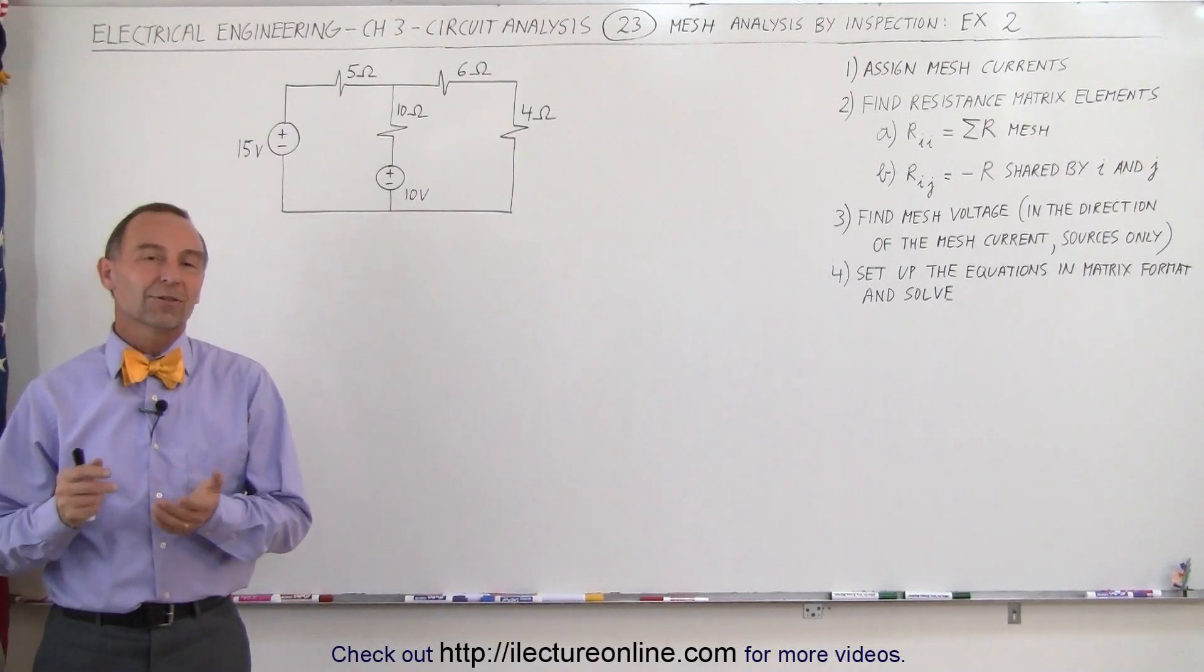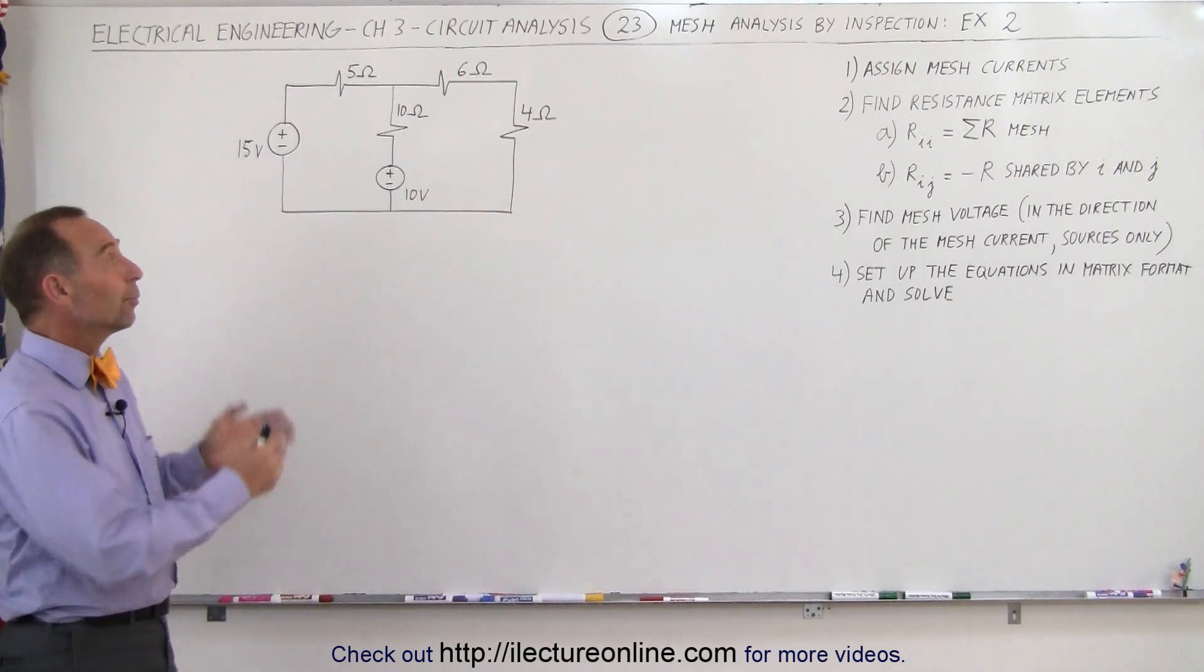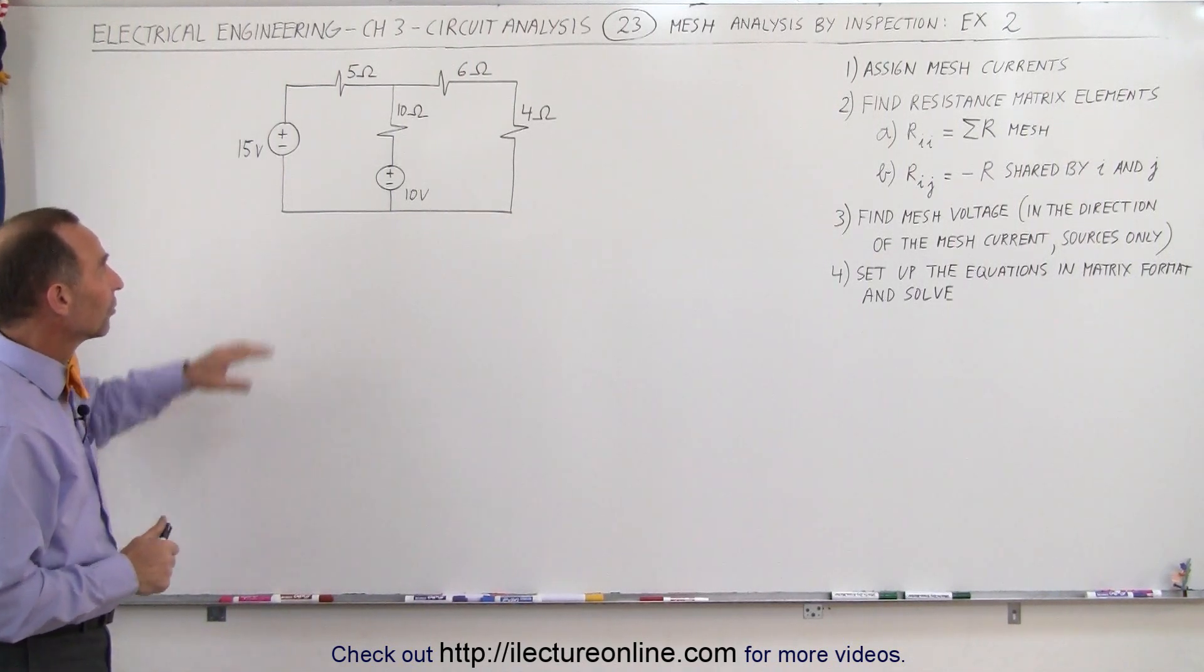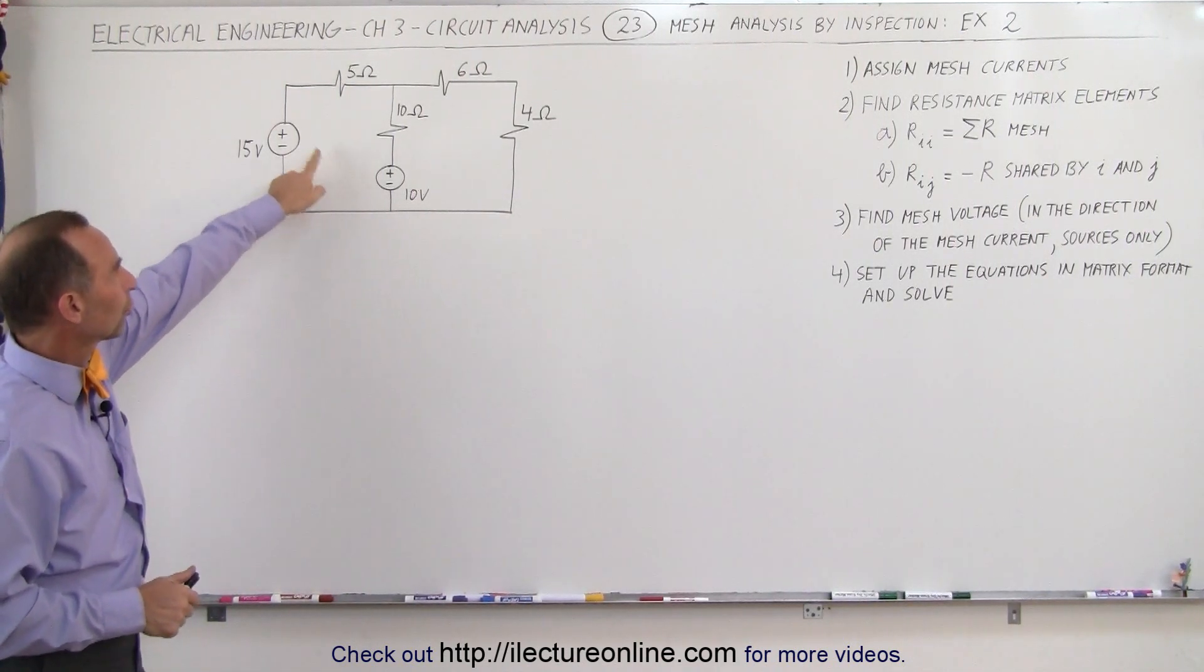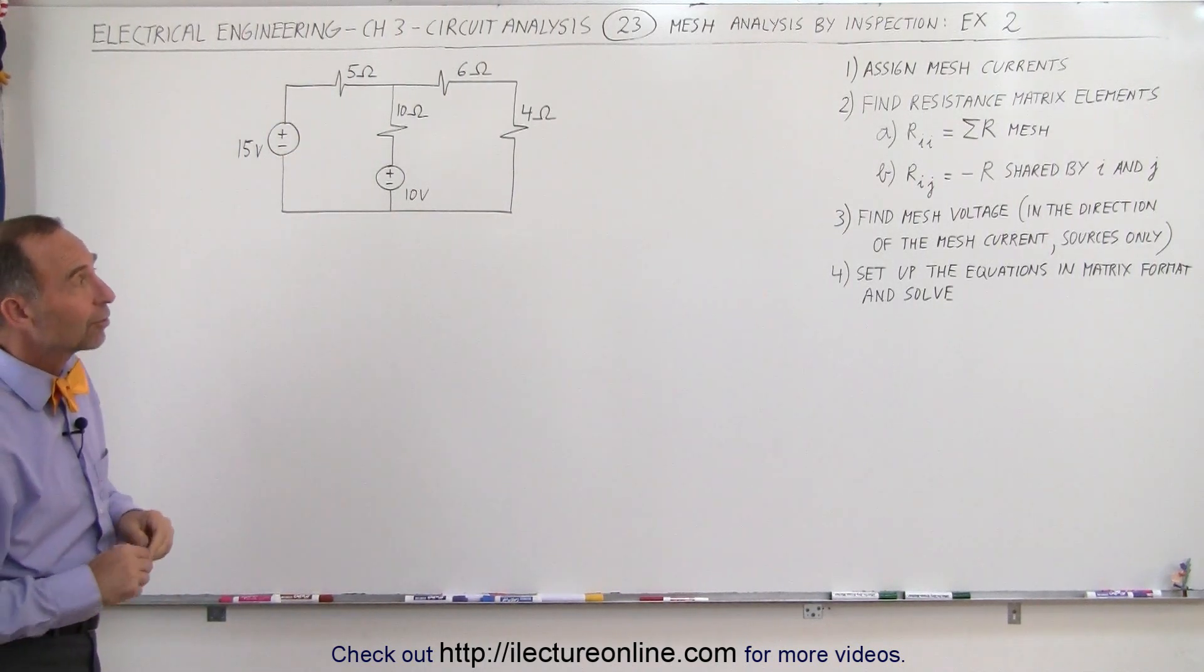Welcome to ILectureOnline. Here's our second example of how to use the mesh analysis by inspection method on a relatively simple example. You can see we have two voltage sources and four resistors. Let's go ahead and follow the instructions on how to do that.